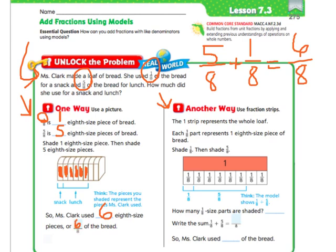Another way is to use fraction strips. The 1 represents the whole loaf of bread, and then each 1/8 part represents 1 eighth-size piece of the bread — it's like slices. So we're going to color in the 1/8 that Ms. Clark used for the snack, and then color in 5 more that she used for her lunch. How many 1/8-size parts are shaded? 6. So 1/8 plus 5/8 equals 6/8 — she used 6/8 of the bread.